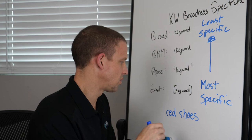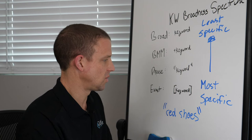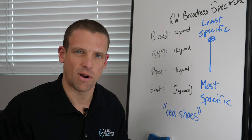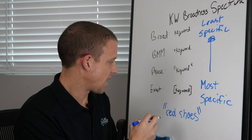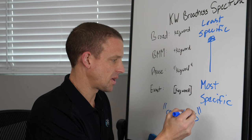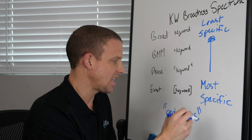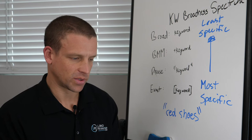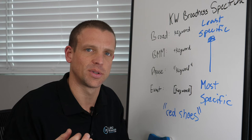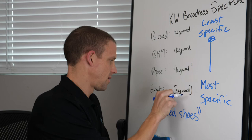Now let's say someone is searching for 'best red shoes.' The phrase match keyword — phrase match is the one with quotes around it — this keyword would get triggered or activated by 'best red shoes.' Phrase match means the phrase has to be contained within the search query. So 'best red shoes' — this keyword gets triggered, the ad would be shown. But if someone typed in 'red high heel shoes,' this keyword would not be triggered.